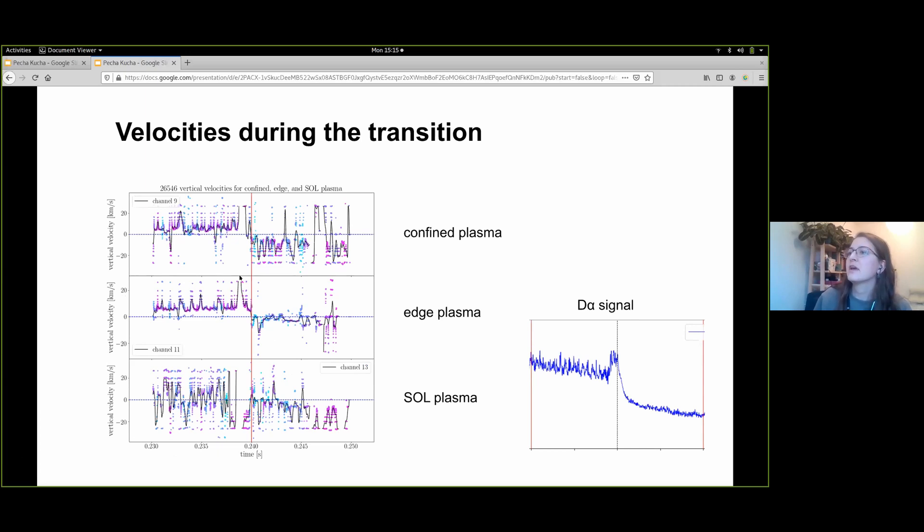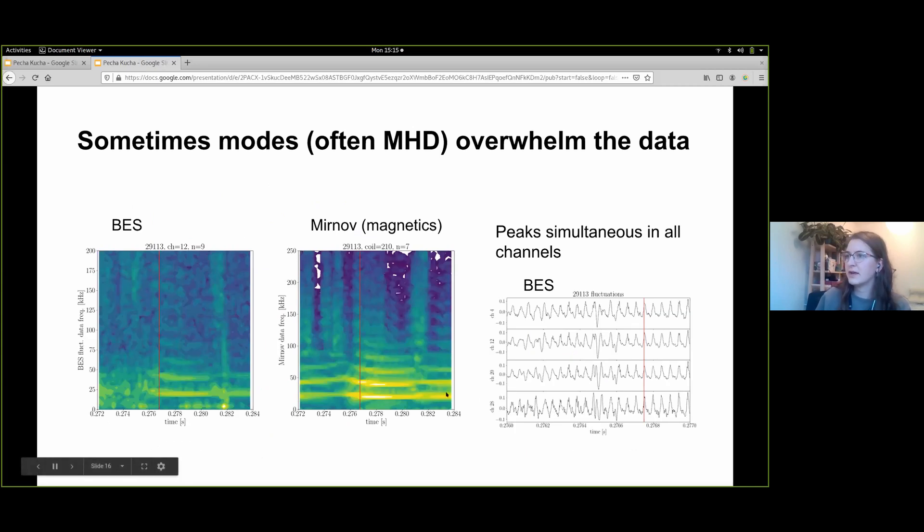Often some modes are seen in H-mode up until the transition, sometimes a very strong mode just before the transition which precedes the D-alpha flash. Sometimes these modes overwhelm the data, present in both the BES and magnetics data, strongly suggesting they might be MHD in nature, with fluctuations simultaneous in all channels.